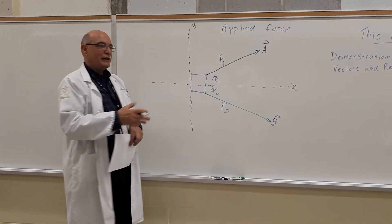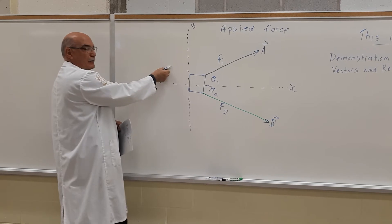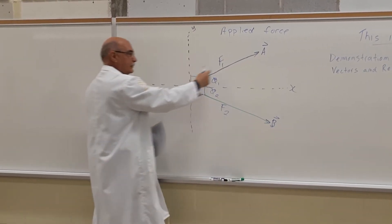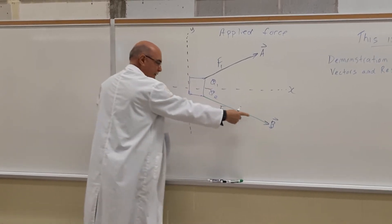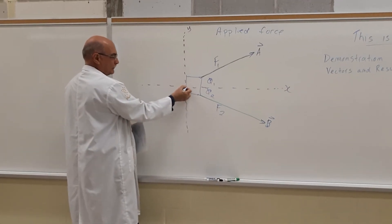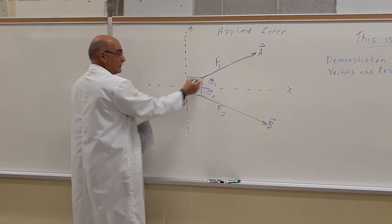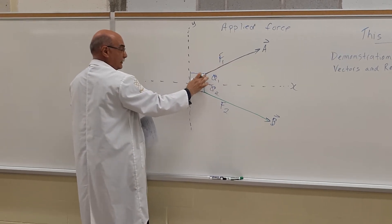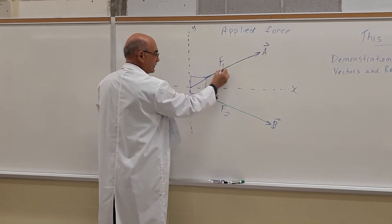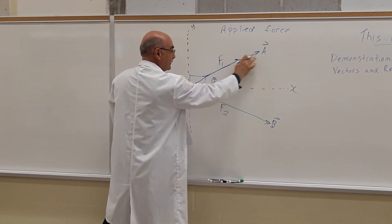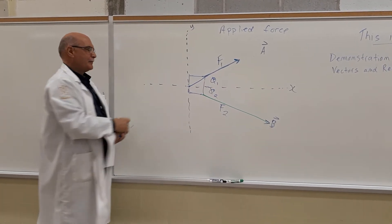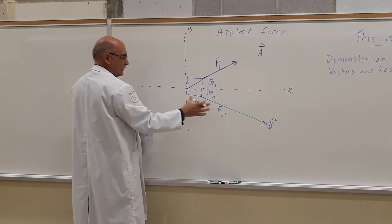The property of vectors is we can pick them up and move them anywhere on this two-dimensional plane. Anywhere at all, as long as we don't change the magnitude and we don't change the direction. So I can pick this vector up and move it to the origin right here where the X and Y axes cross. Pick that vector up and move it down here. So I'm going to shorten it by about this much. Well, not really shorten it, but redraw it such that here's the vector. I picked it up and moved it such that it's joining here at the origin.